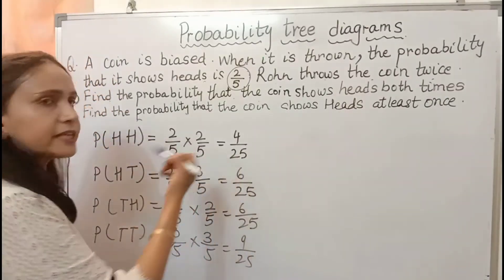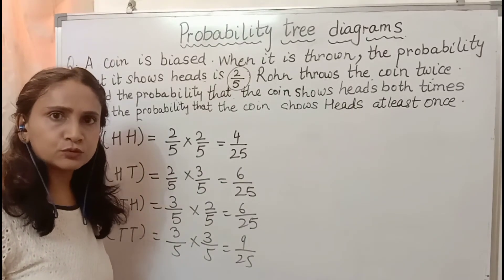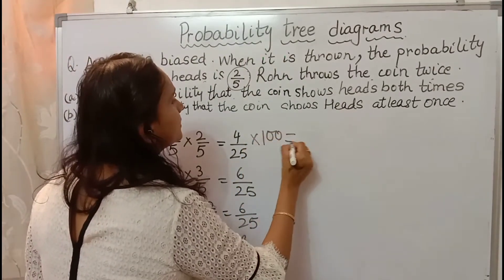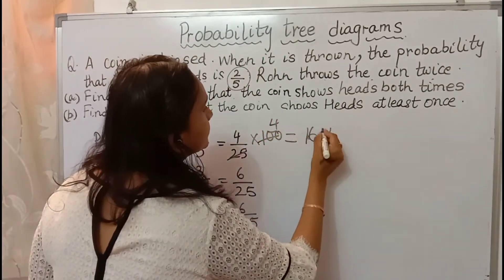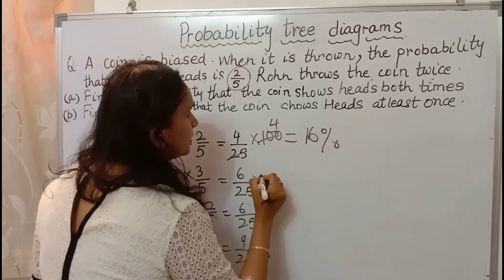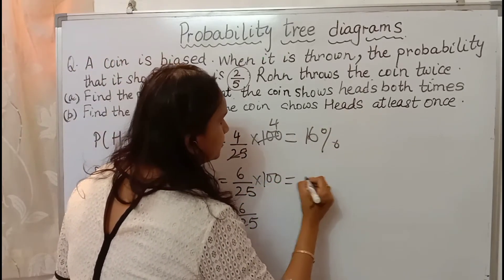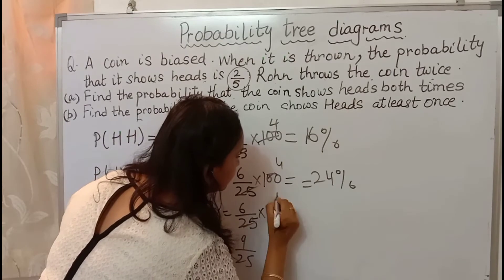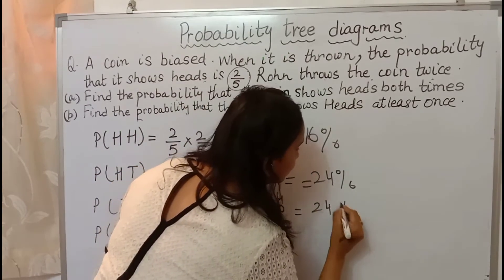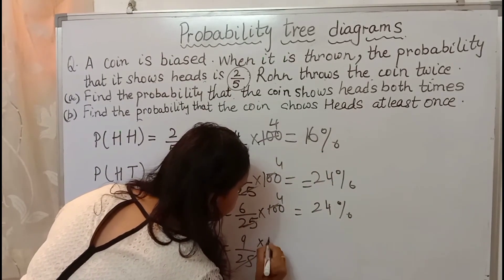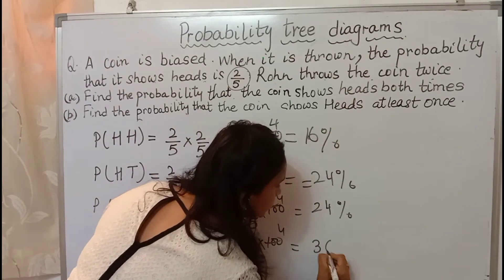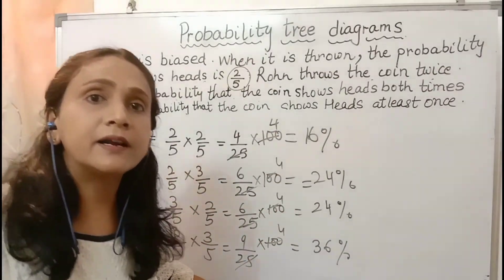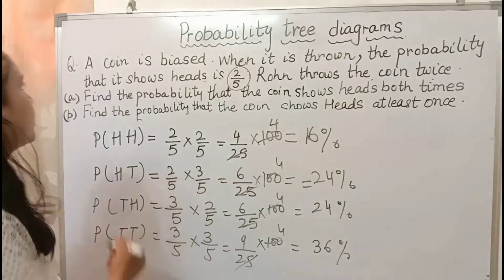Children, you can also change this into percentage because in some questions they ask for percentage. When you multiply by 100 it changes into percentage. So 4 by 25 is 16%, 6 by 25 is 24%, another 6 by 25 is 24%, and 9 by 25 is 36%. If you add all the percentages you get 100%.